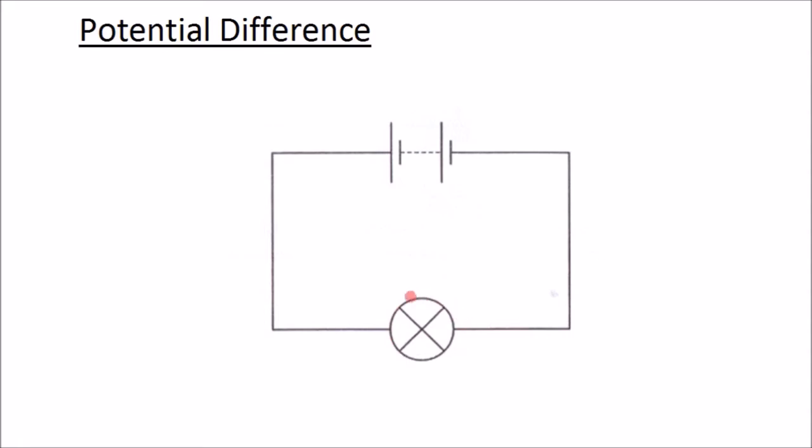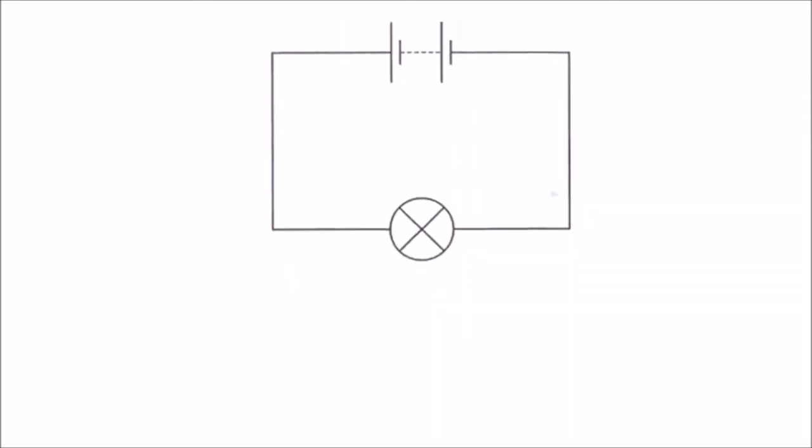For example, the lamp here. And if we were to look at the potential energy on one side of the lamp versus on the other side, we would find that there is a difference in energy, and that's what we call a potential difference, and it's measured in volts. So to explain this a bit further, let's have a closer look at this circuit with the lamp and the battery.